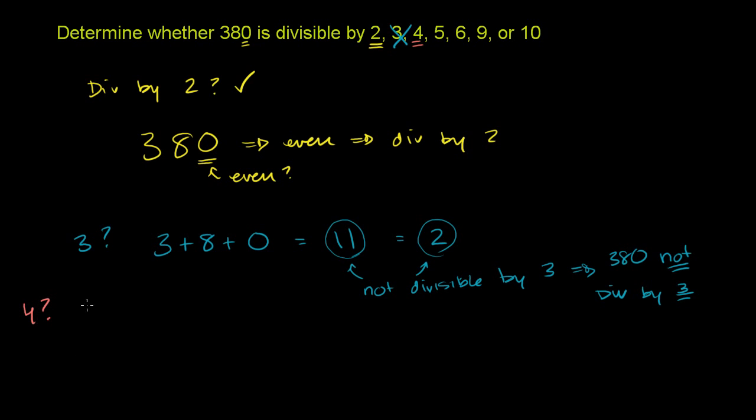Another way to think about it is, are the last two digits divisible by 4? And this comes from the fact that 100 is divisible by 4. So everything on the 100s place or above, it's going to be divisible by 4. You just have to worry about the last part.